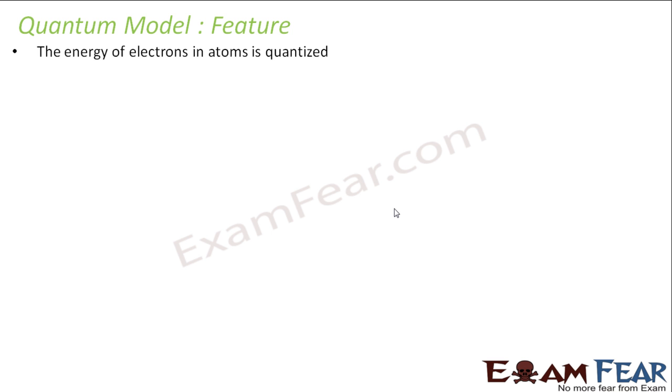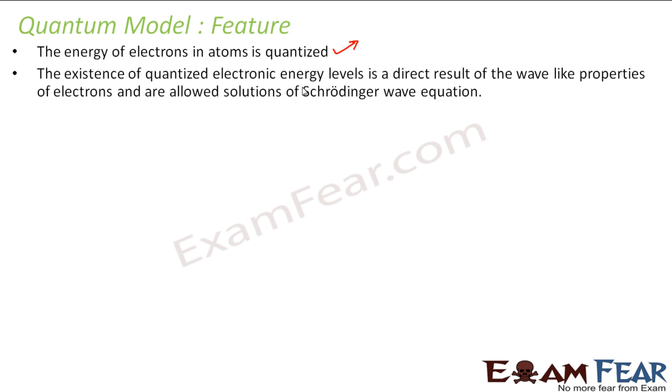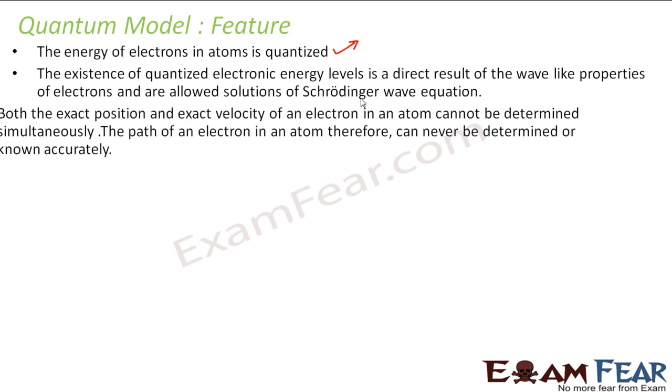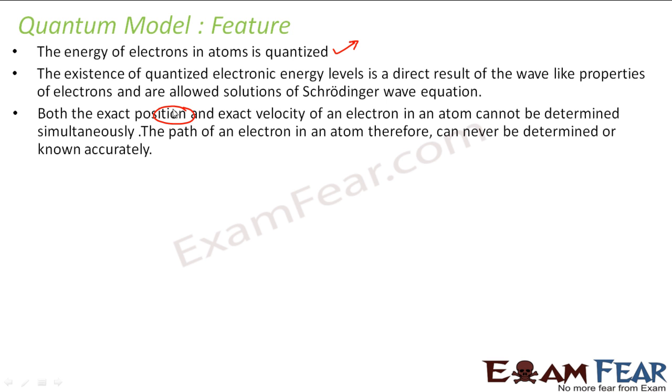So there are some features of the quantum model. The energy of the electron in atom is quantized. And this is something which Bohr also told. And the existence of quantized electronic energy level is a direct result of wave-like properties of electron.